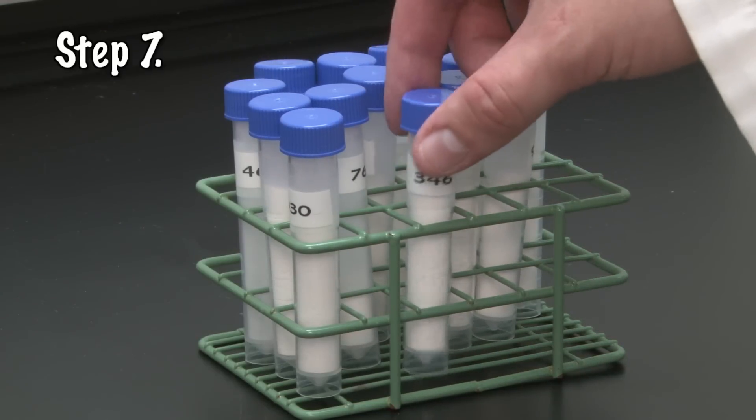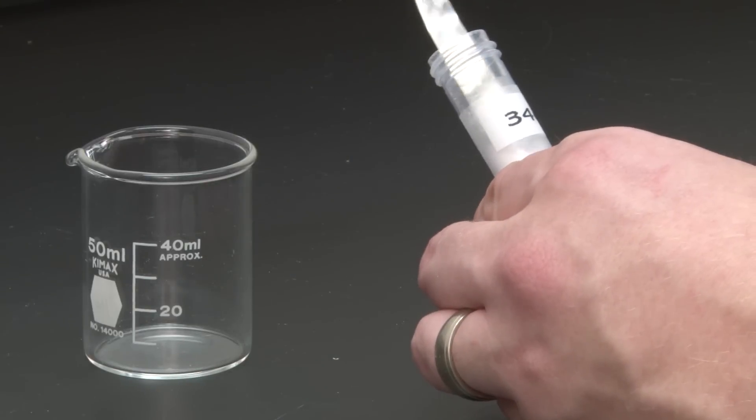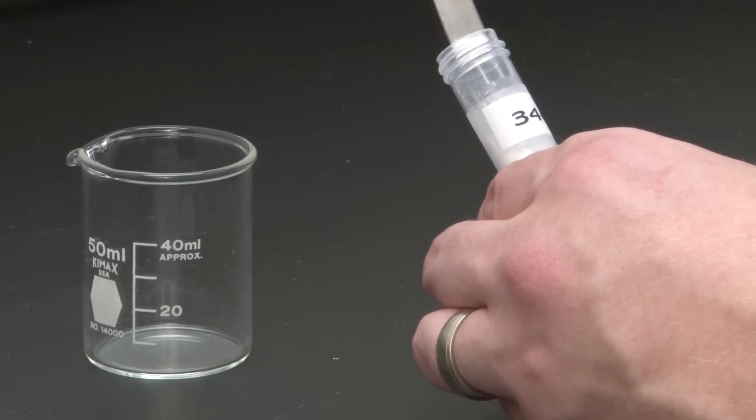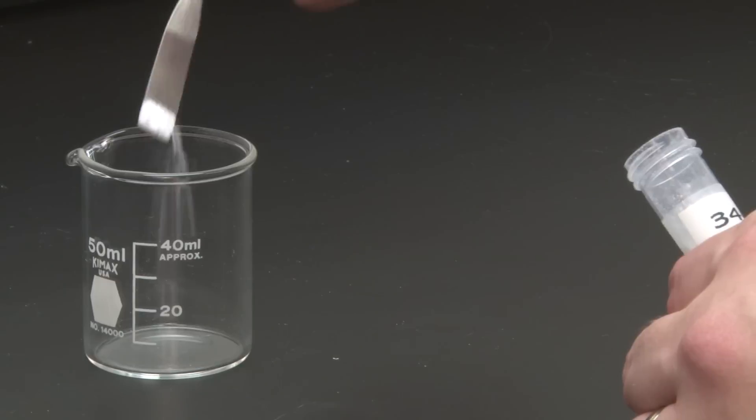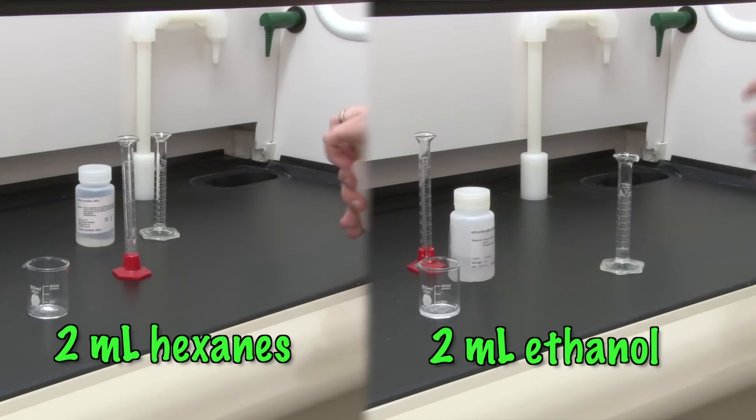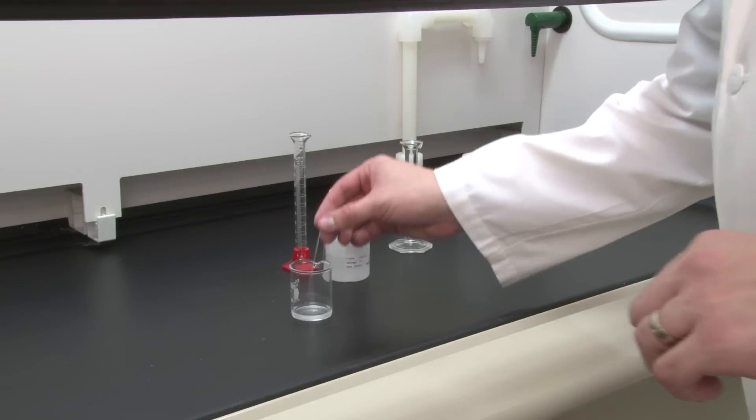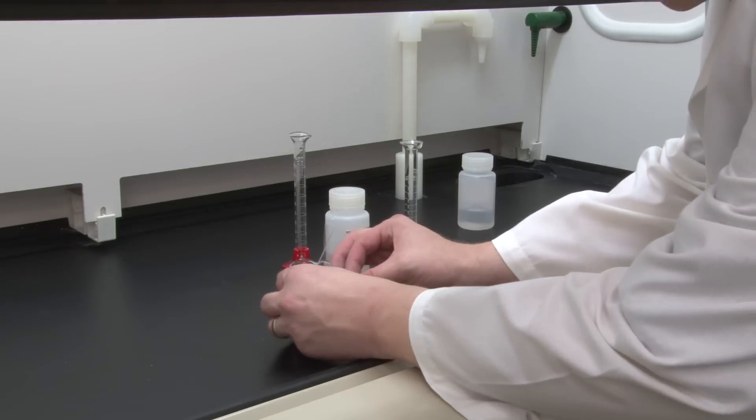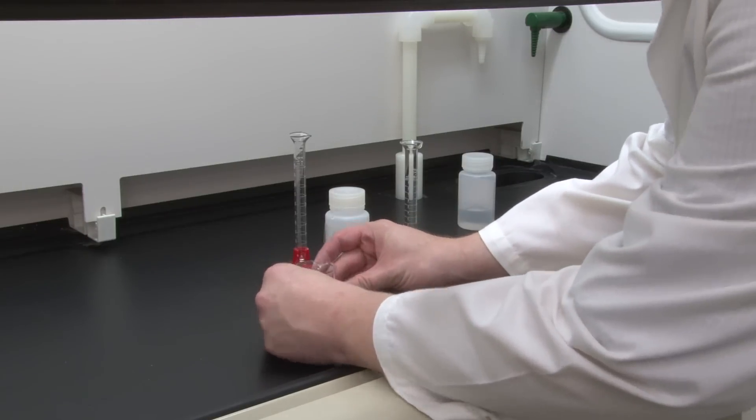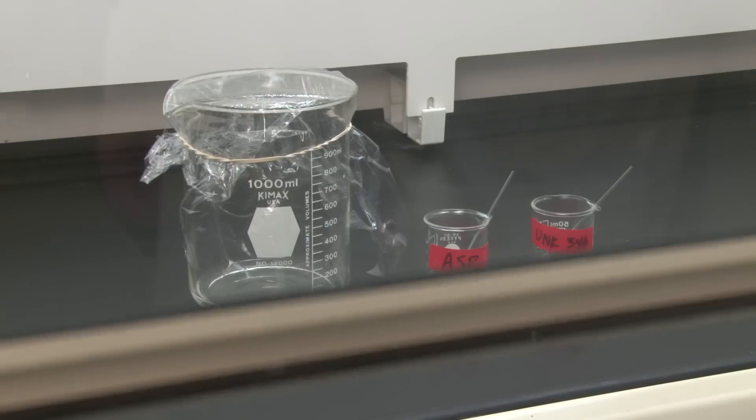Now, get an unknown sample from your instructor. Be sure to write down the unknown's number. Prepare it in the same way you prepared the known sample. Place a small amount in a separate 50-milliliter beaker and add ethanol and hexane under the hood. Stir, label the beaker, and add a capillary tube. Return the remainder of the powdered unknown to your instructor. At this point, you should have your developing chamber, a dissolved known sample, and a dissolved unknown sample.